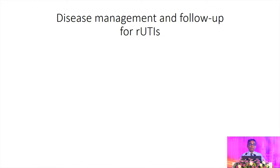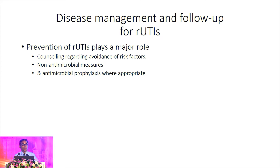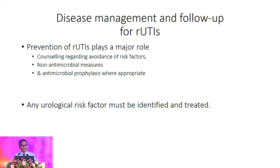How are we going to manage and follow up these patients with recurrent urinary tract infection? Number one is prevention of recurrent urinary tract infection — most guidelines endorse preventive aspects. You may have to counsel the patient on risk factors, engage in non-antimicrobial measures, and some individuals may require antimicrobial prophylaxis. All urological risk factors have to be identified and managed according to guidelines.